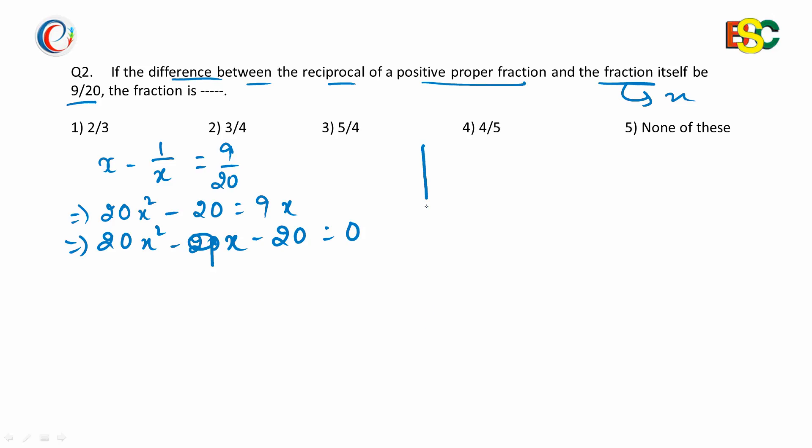Now we'll find the roots for x, which we can find in three simple steps. Step number one: the product of 20 into 20 is 400. Now we'll learn how to find the factors of this 400 mentally.